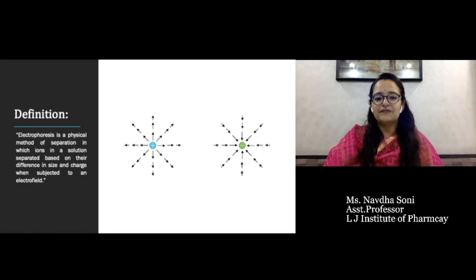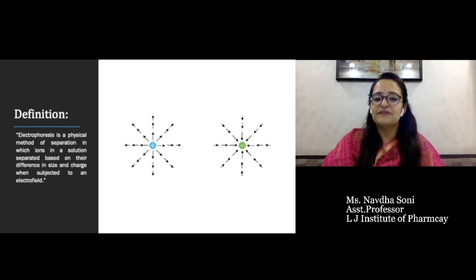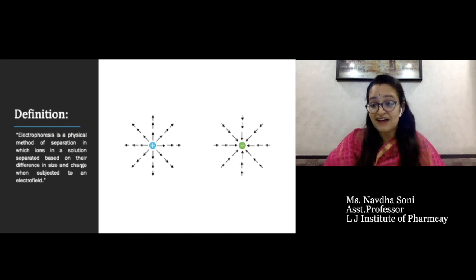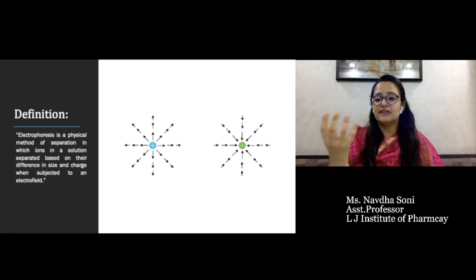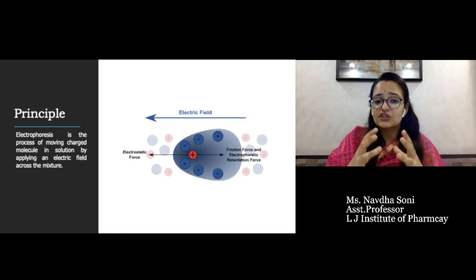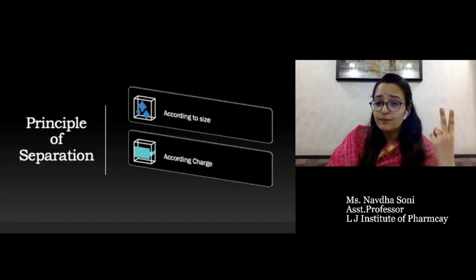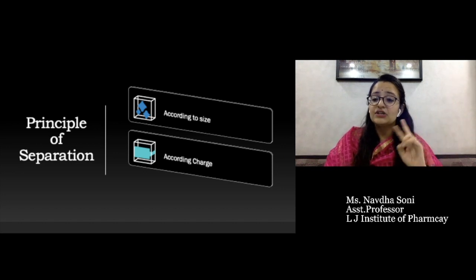So let's start with electrophoresis. First of all, what is electrophoresis? The name itself suggests it is something related to electric field. Electrophoresis is the physical method of separation in which ions in the solution are separated based on their size and charge when subjected to an electric field. There is a charged molecule, and the smaller and larger molecules get separated with the help of an electric field. The main two principles are: separation based on size and separation based on charge.